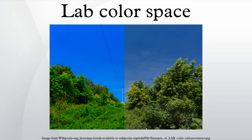The lightness correlate in CIE is calculated using the cube root of the relative luminance. The LAB color space includes all perceivable colors, which means that its gamut exceeds those of the RGB and CMYK color models. One of the most important attributes of the LAB model is device independence — the colors are defined independent of their nature of creation or the device they are displayed on. The LAB color space is used when graphics for print have to be converted from RGB to CMYK, as the LAB gamut includes both the RGB and CMYK gamut. It is also used as an interchange format between different devices due to its device independency.